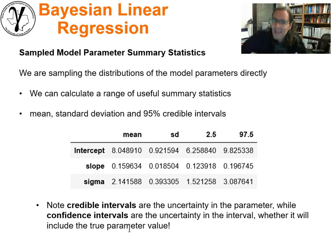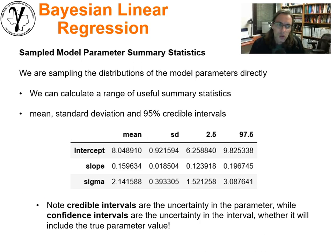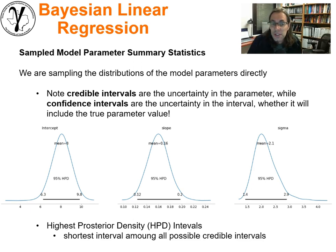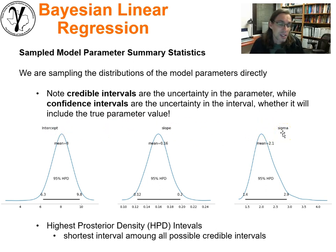That's distinctly different from the frequentist approach. Confidence intervals from frequentist methods measure uncertainty in the interval, not the uncertainty in the actual model parameter — they capture whether the true parameter is included in the interval if we had resampled many different times, 95% of those intervals would include the true value. We can also visualize the credible intervals by looking at the PDFs we've calculated for intercept b0, slope b1, and sigma, the homoscedastic variance.